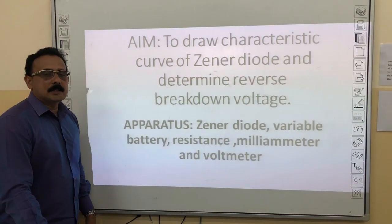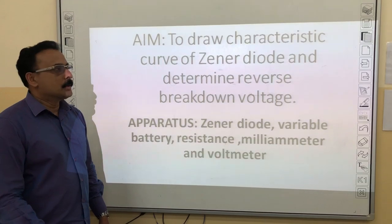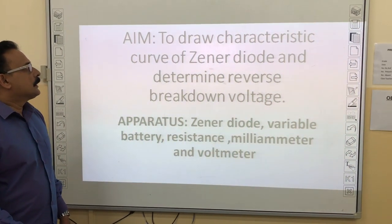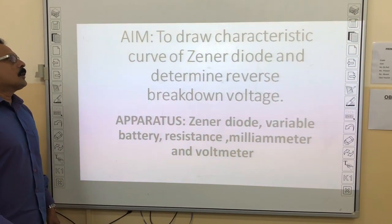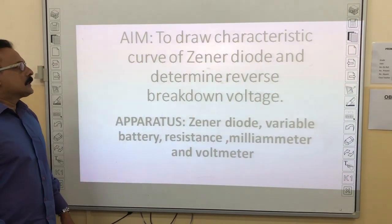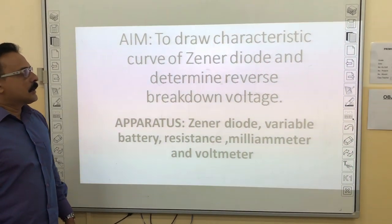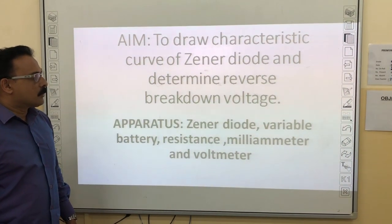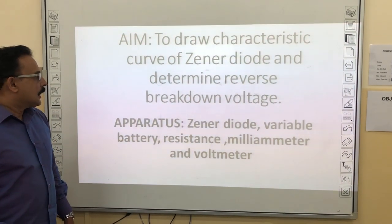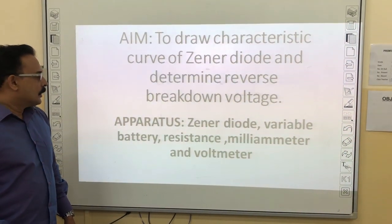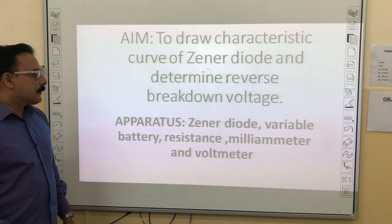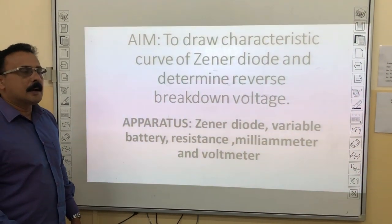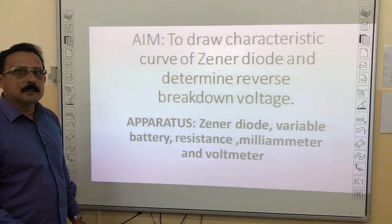Today we will be doing an experiment related to a zener diode. The aim is to draw the characteristic curve of a zener diode and determine the reverse breakdown voltage. The apparatus needed includes a zener diode, a variable battery, a resistance, a milliammeter, and a voltmeter.